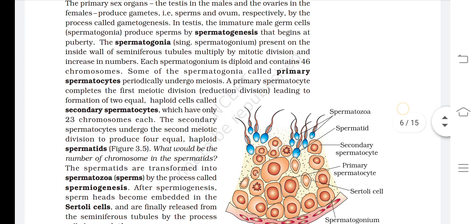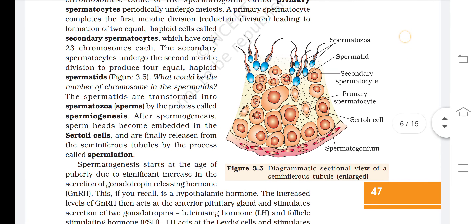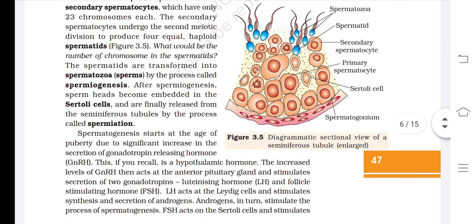The number of chromosomes in the spermatids is 23. The spermatids are transformed into spermatozoa by the process called spermiogenesis. After spermiogenesis, sperm heads become embedded in the Sertoli cells and are finally released from the seminiferous tubules by the process called spermiation.